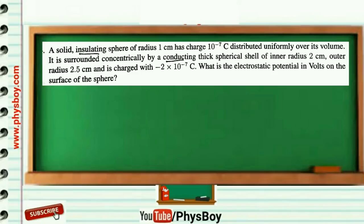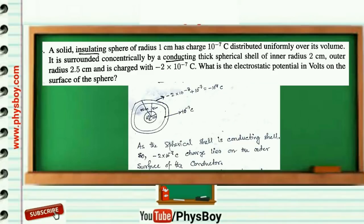Next question: a solid insulating sphere of radius 1 cm has charge 10⁻⁷ coulomb distributed uniformly over its volume. It is surrounded concentrically by a conducting thick spherical shell of inner radius 2 cm and outer radius 2.5 cm, charged with −2×10⁻⁷ coulomb. What is the electrostatic potential in volts on the surface of the sphere? If you draw the picture: the spherical shell is conducting, so −2×10⁻⁷ coulomb charge lies on the outer surface of this conductor.